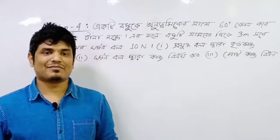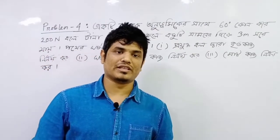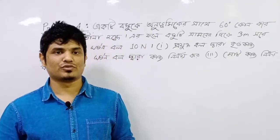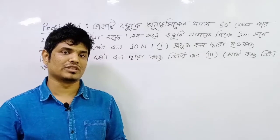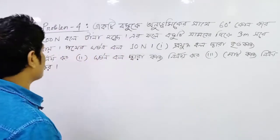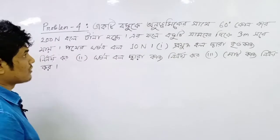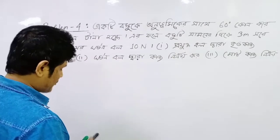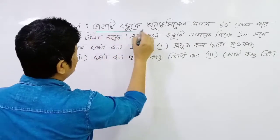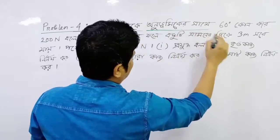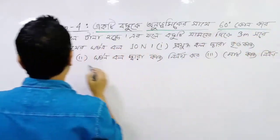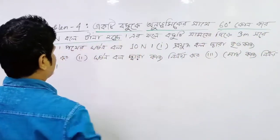This is another very special thing, and it is very important to see the theta. So this is problem number 4. The quantity is at 60 degrees, which gives us 200 N.